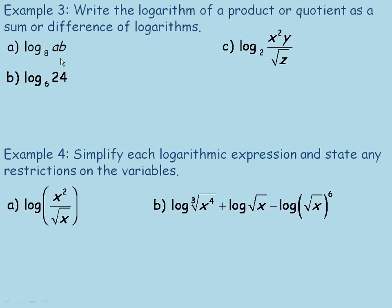For example in part A, we have the log base 8 of AB, so the product is AB. We only have two factors, A and B, so the only way to write that is as a sum. It would be the sum of log₈a plus log₈b, of course both base 8.